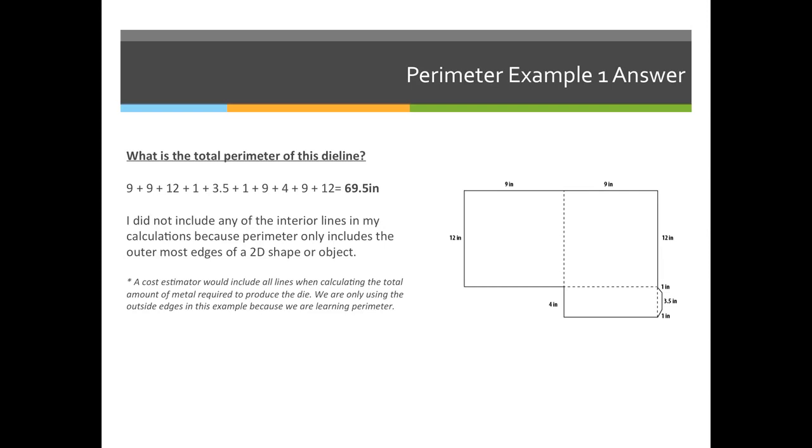However, if I was going to price out the die for this, I need to also count these dash lines, or the interior lines. So I would add another 12, 9, and 3.5 to get the total amount of metal needed to print this die.